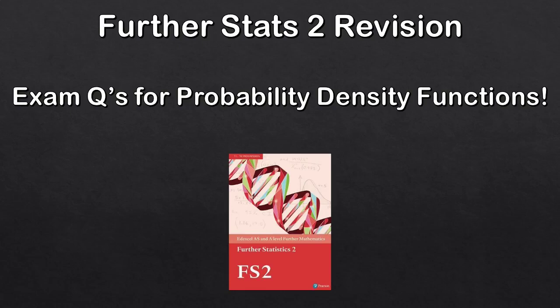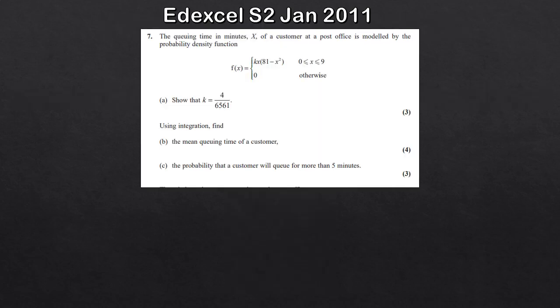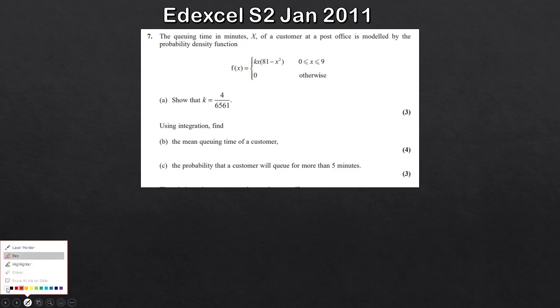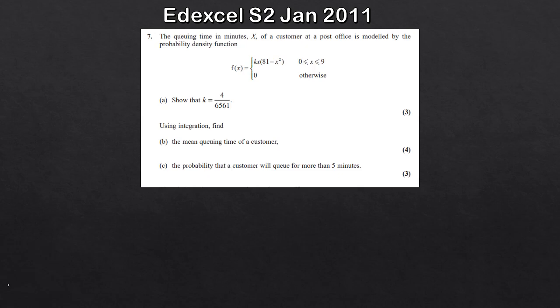Welcome back to another Further Stats 2 revision video. Today we're going to look at PDFs, or probability density functions. We've got a mix of questions, some easier than others, covering the main parts. The queuing time in minutes, x, of a customer at a post office is modelled by a given PDF. The first part asks us to show that k is equal to 4 divided by 6561.